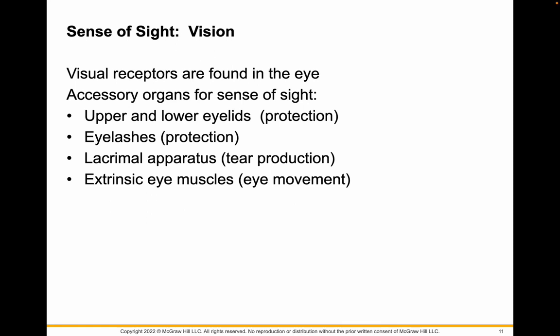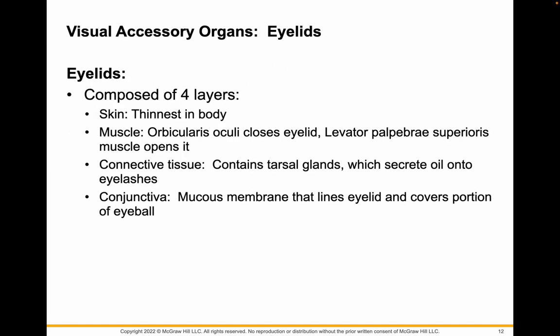Let's talk about sight and vision. You have visual receptors found in your eye. Let's cover some accessory organs first. The upper and lower eyelids are used for protection. Your eyelashes help track dust. Your lacrimal apparatus provides tears, and the extrinsic eye muscles move the eye. Your eyelids have the thinnest skin of your body. Below the skin is the orbicularis oculi, which closes the lid, and levator palpebrae superioris, which opens the eye. Under the muscle, connective tissue contains the tarsal glands, which help keep your eyelashes oiled. The conjunctiva is the mucous membrane that lines the eye, and that's what gets infected when you have pinkeye.